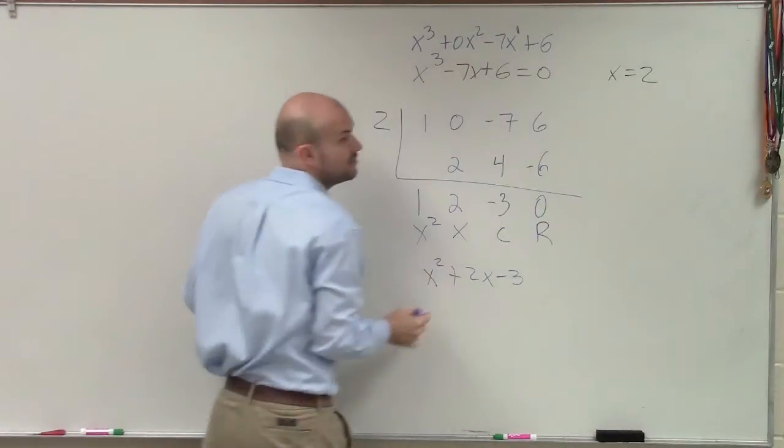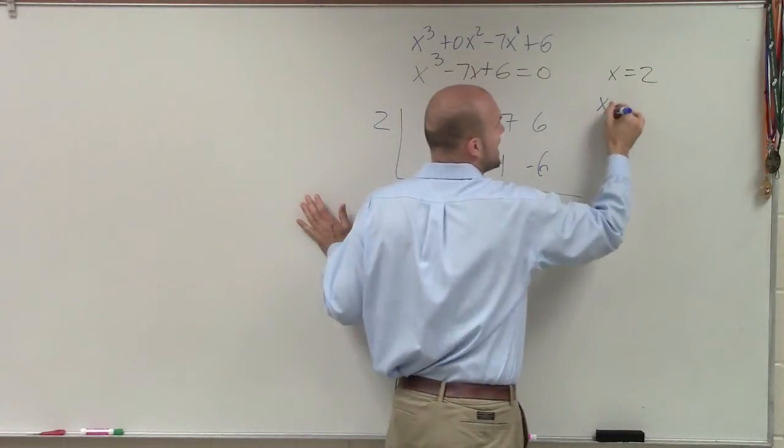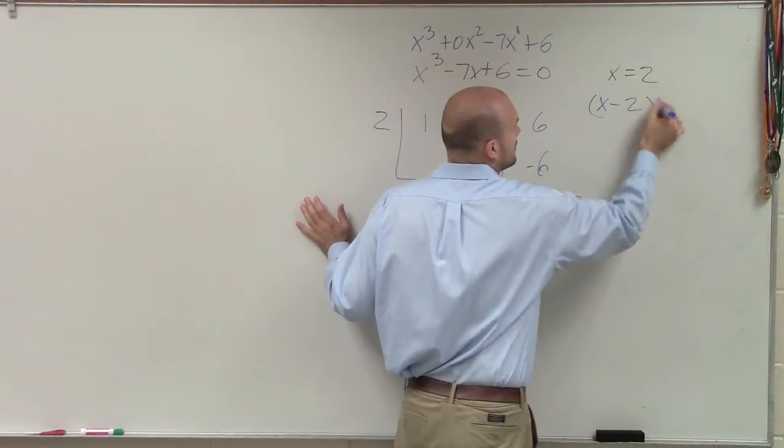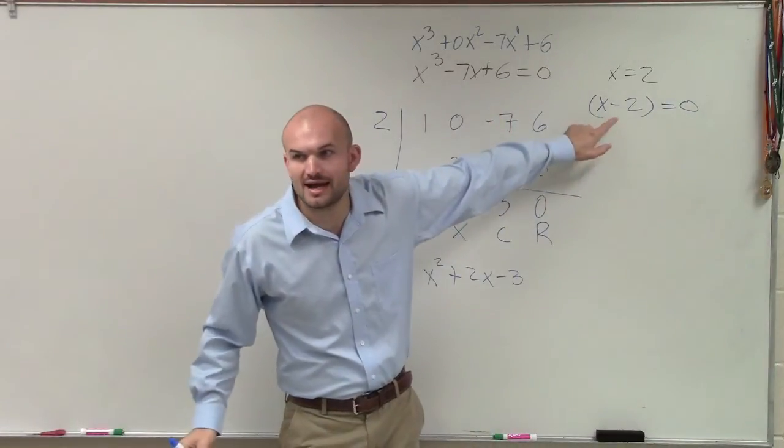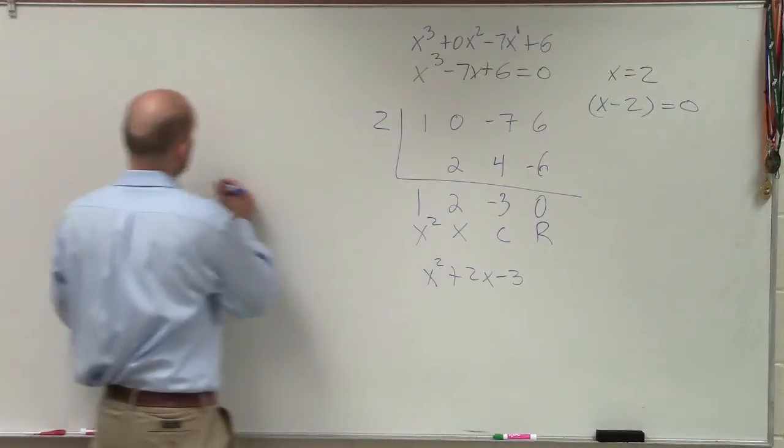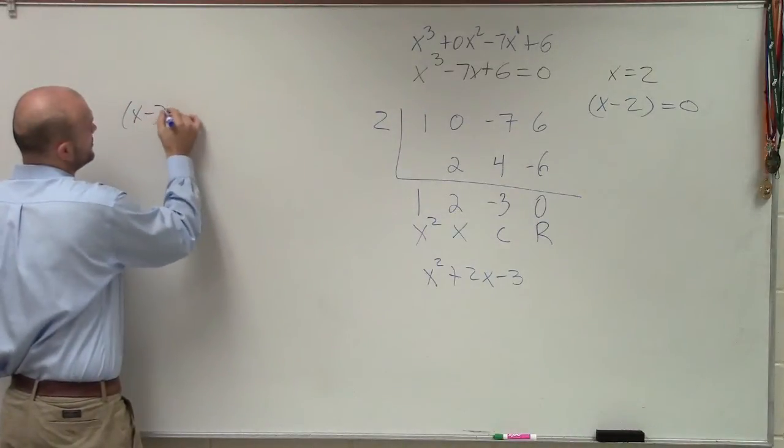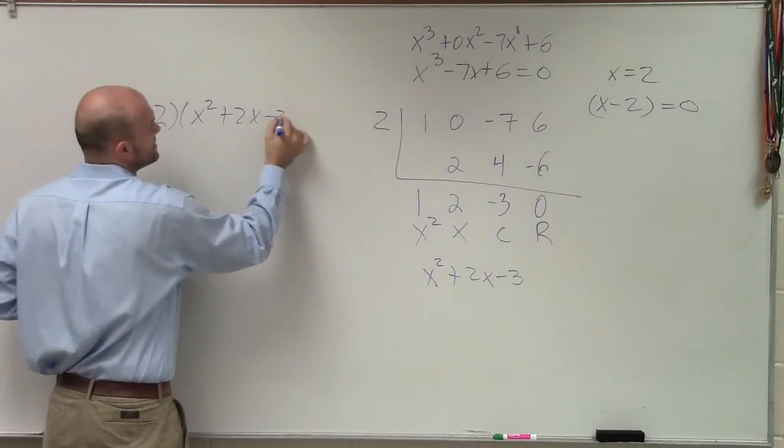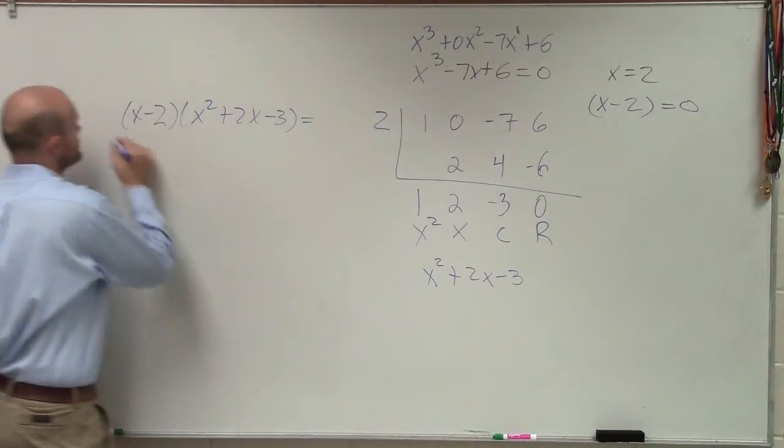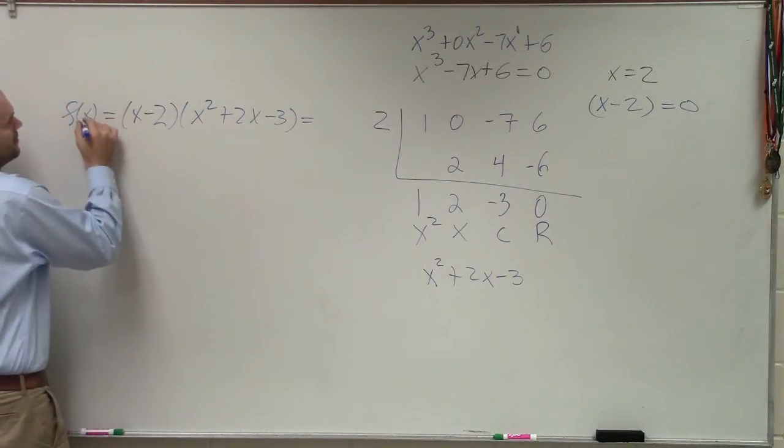So if x equals 2 is my zero, that means x minus 2 equals 0 is my factor. Therefore, I can say that x minus 2 times x squared plus 2x minus 3 equals my function.